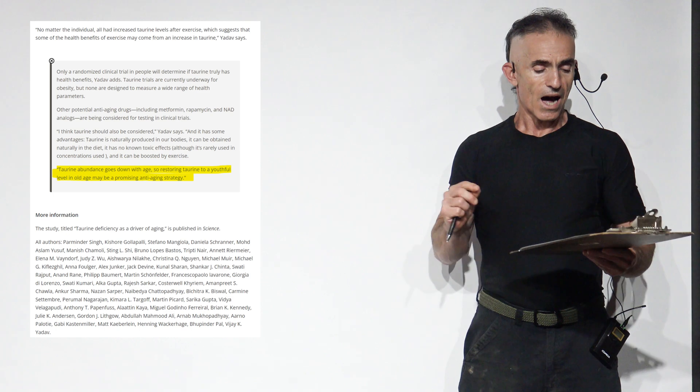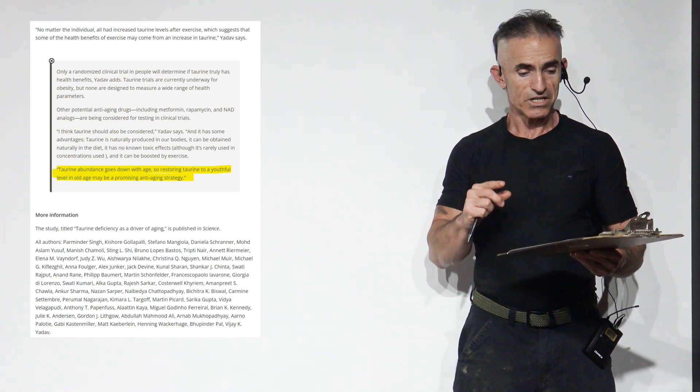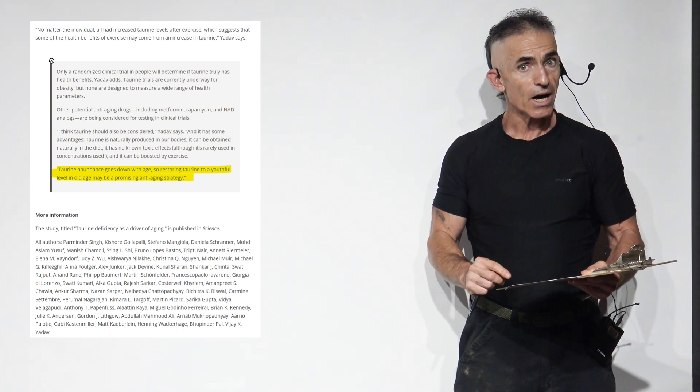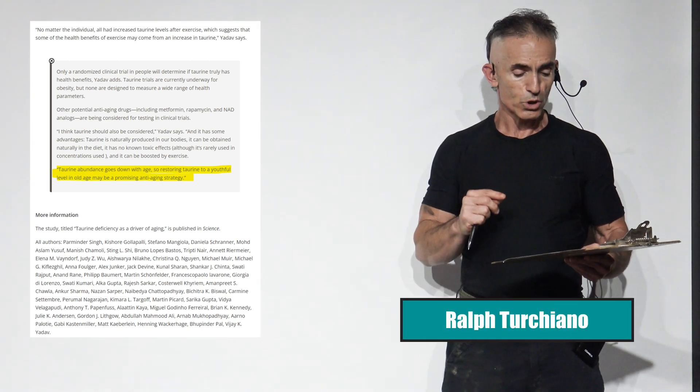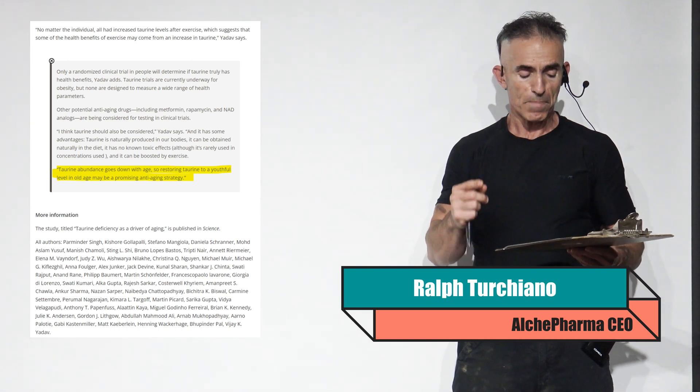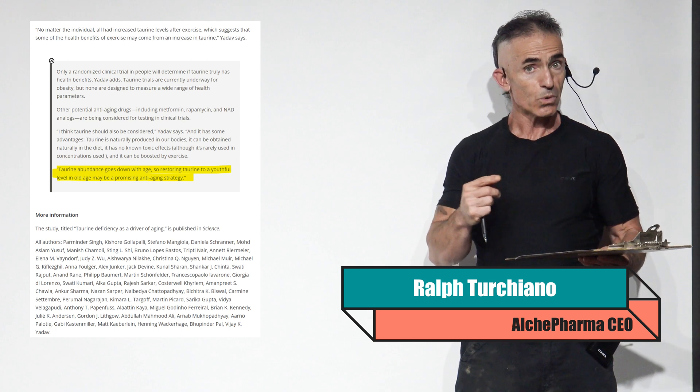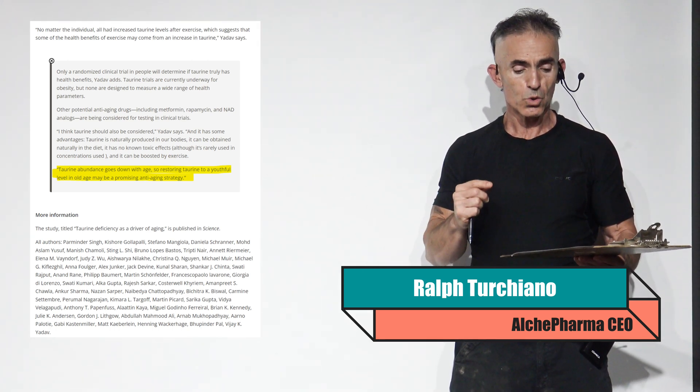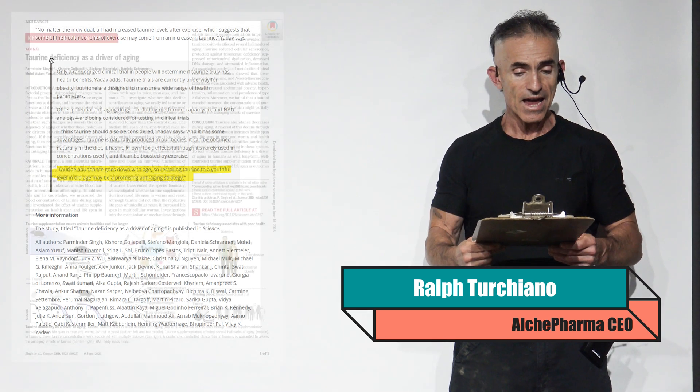Quoting: I think taurine should be considered, and it has some advantages. Taurine is naturally produced in our bodies. It can be obtained naturally in the diet. It has no known toxic effects, although it's rarely used in concentrations above that, and it can be boosted by exercise.